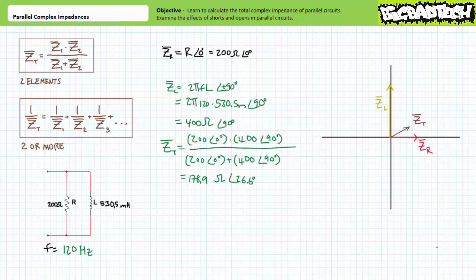Note the total impedance magnitude of this parallel arrangement is still less than either element's magnitude, however it's larger than our original calculation at 60 hertz. This is to be expected given one element comprising the original relationship has increased in magnitude. Additionally, note the positive 26.6 degree angle indicates ZT, the total impedance of this parallel relationship, appears to now be favoring the resistive end of the spectrum. This is to be expected given the inductor's magnitude is now twice that of the resistor and less current would be expected to flow through it. Again, the element in the parallel relationship with the lowest magnitude seems to be determining the nature of the total impedance.